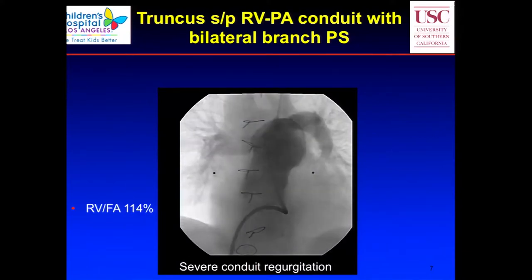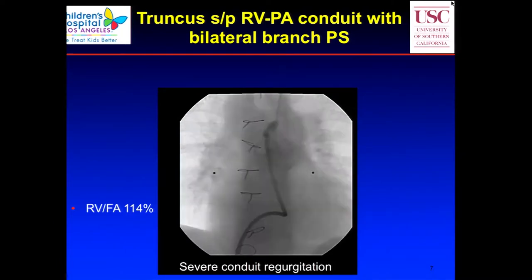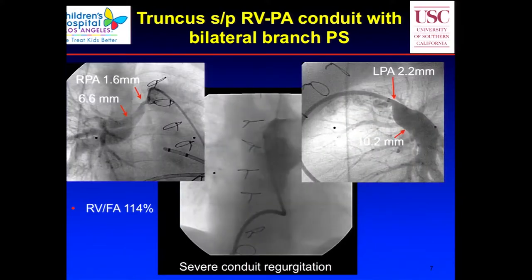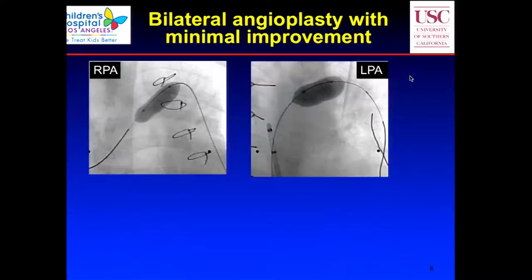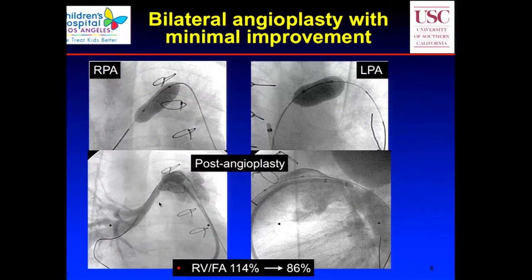Here's an example of a truncus repair. After surgery the RV pressure is 114 — clearly bilateral stenosis, almost visible on the angiogram. We took the child to the cath lab and saw severe regurgitation. On the angulated shots, you see a severe stenosis measuring 1.6 millimeters, with the vessel very big distally at approximately 2.2 millimeters. We ballooned them in the cath lab knowing we couldn't get a stent into a small baby at that time — but there was a lot of recoil. We improved it, but not enough, so we knew we had to do more.